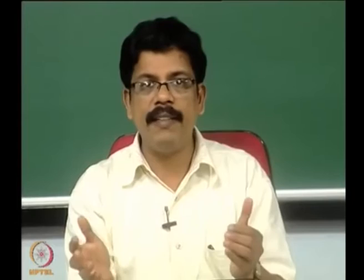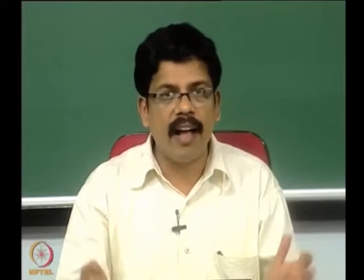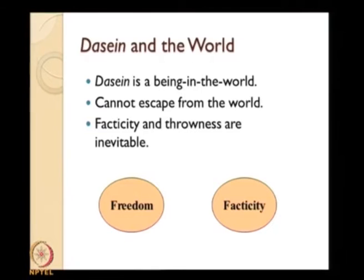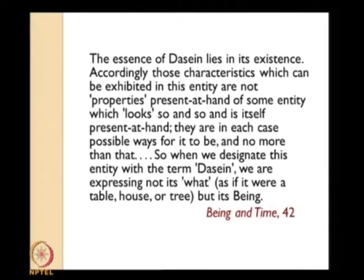There is no way the being of man can escape being situated, thrown into a world of objects, entities, and possibilities. On the one hand there is freedom — unlike other objects, the being of man has freedom. But at the same time there is facticity: I find myself here, constrained by the fact that I am here. There is an apparent conflict between these two aspects. As Heidegger writes in Being and Time: 'The essence of Dasein lies in its existence.'